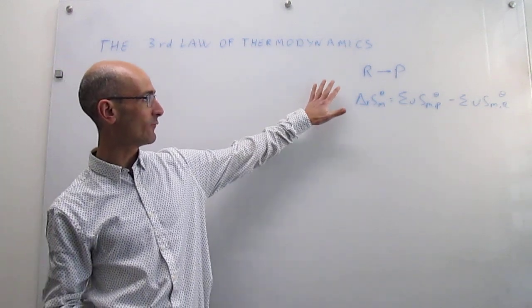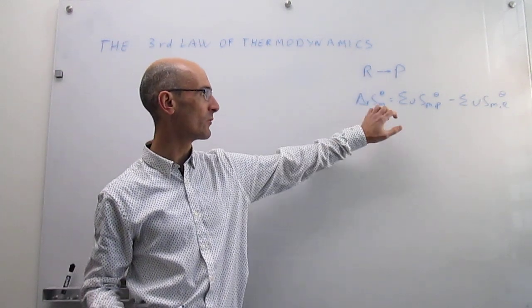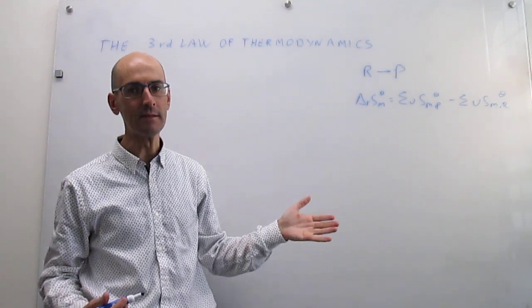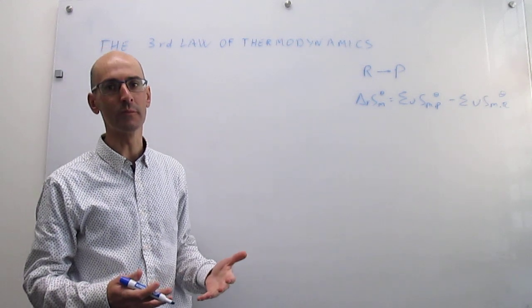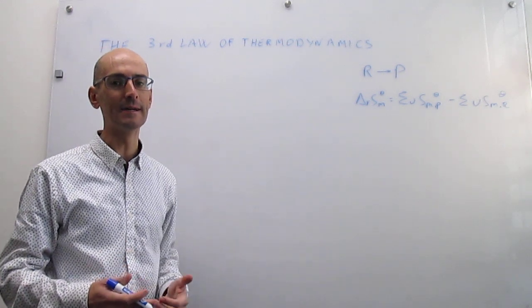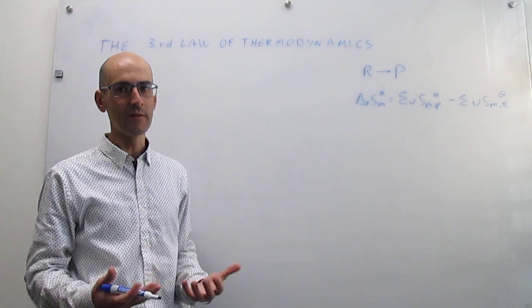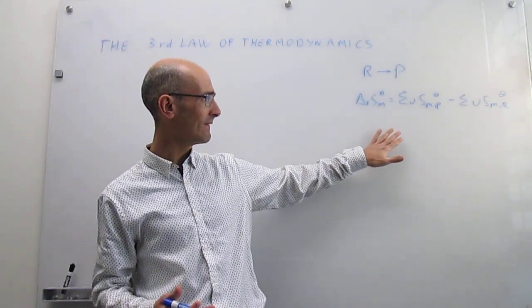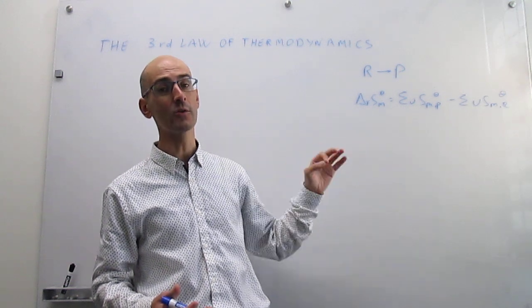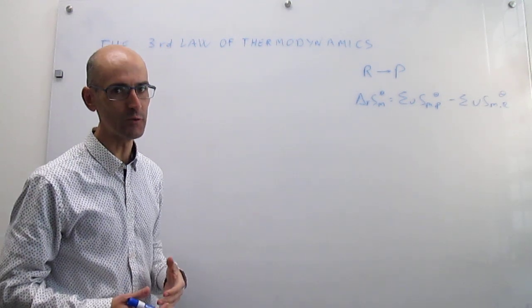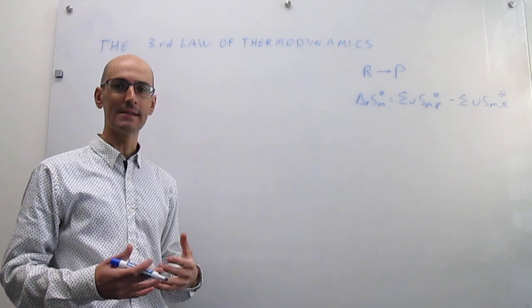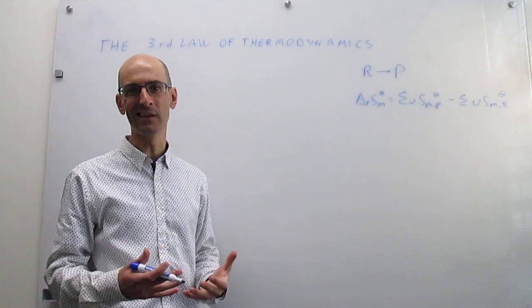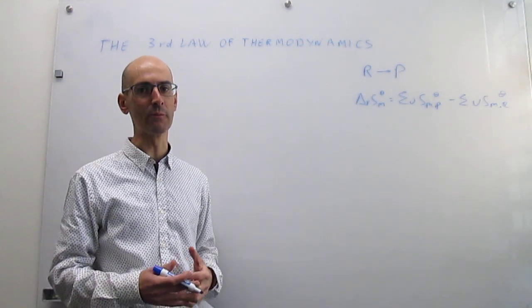For a chemical reaction where reagents go to products, you can in principle set up the calculation as simply the difference in a measure of entropy in products minus the same measure of entropy in reagents. The question is, how do we get those measures of entropies? In the case of entropies, you can actually determine what is the absolute molar entropy of a substance. That's something that was not possible with the enthalpies, and then we had to use an alternative relative scale of enthalpies called the enthalpies of formation.